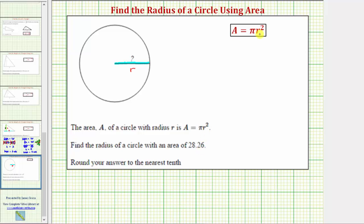And because the area is equal to pi r squared, we know that pi r squared must equal the known area of 28.26. So if we solve this equation for r, we can determine the radius of the circle with the given area.